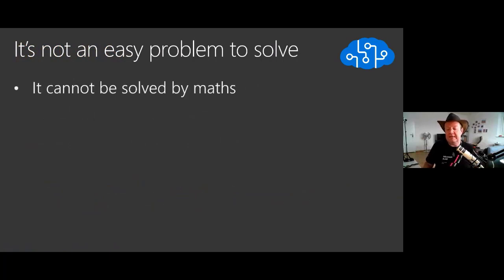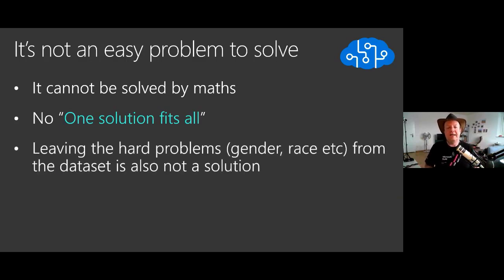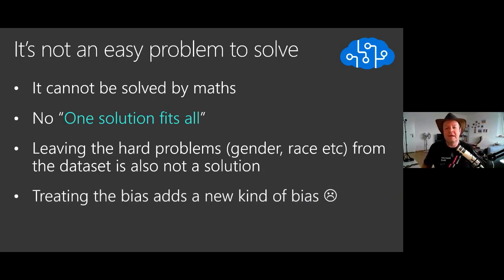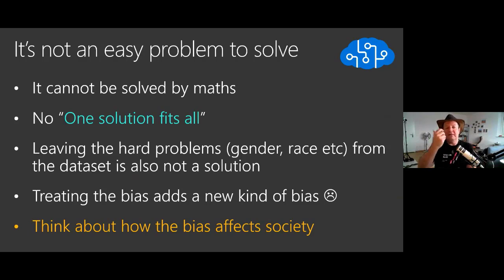It's not an easy problem to solve. Bias is very complicated to solve because it's not a bug - the system actually works as intended, so you cannot go and fix the bug. There is no one solution fits all, no one thing that you can do which is going to fix the problem for everyone. If you decide to remove the column with the gender or race, it doesn't solve the problem. The bias is still there, except that you made it even harder to understand and recognize. If you try to treat the bias by oversampling women or people of color, then you add a different type of bias into your system. You need to really understand that your AI model is going to be biased whatever you do, and learn to recognize this bias and treat it.